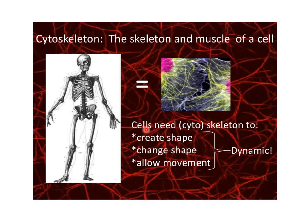The cytoskeleton is needed by the cell to create its shape, change its shape, and allow its movement.